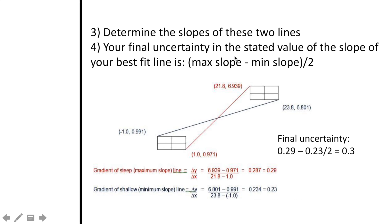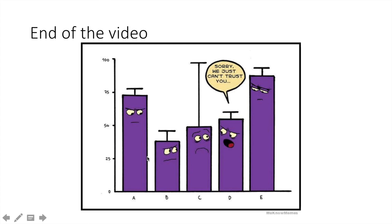To find your final uncertainty in the stated value of the slope of your best fit line, all you need to do is take your maximum slope minus your minimum slope and divide that by 2. In this case, we would have 0.29 minus 0.23, which is my minimum, and divide that all by 2 and we get an answer of 0.3, which would be this line in between the red and the black line. We have reached the end of the T-notes. Thank you for watching and be ready to use this information in class.